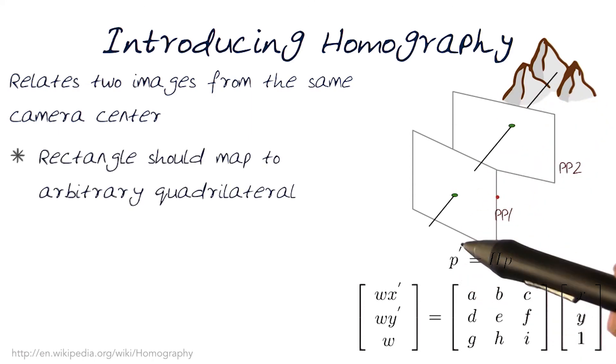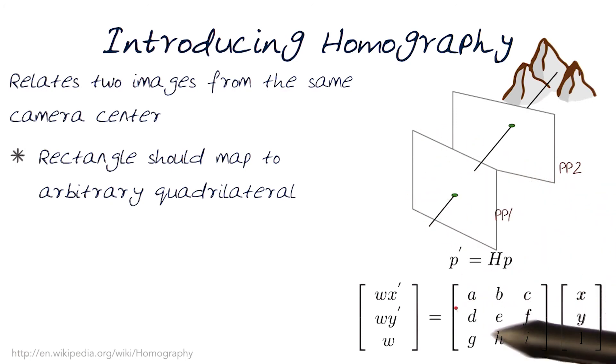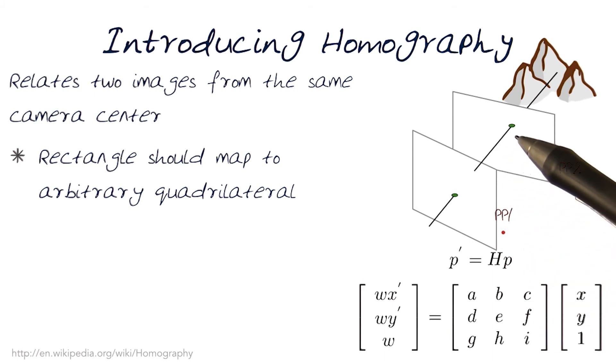The basic idea is this: this is a rectangle. Remembering the properties of these equations, a rectangle should map to any arbitrary quadrilateral. Lines should remain lines. They do not have to be parallel.